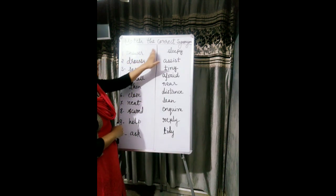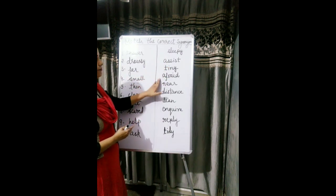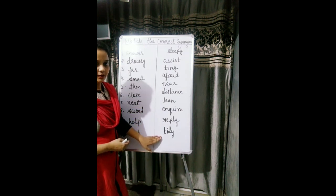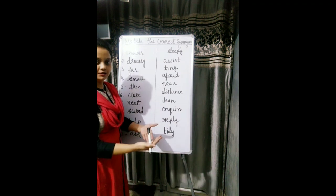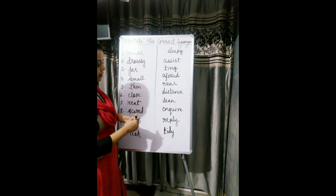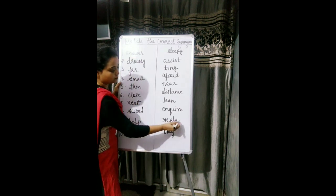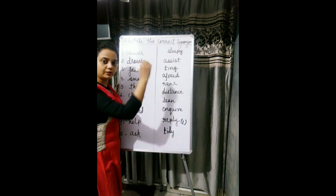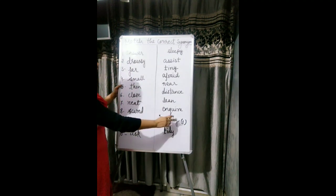The options are assist, tiny, afraid, near, distance, leave, enquire, reply, or title. If you see the word reply — it also means to give the answer, to reply to someone, to give the answer to someone. So reply is the synonym of answer. Number one: reply. Second one is drowsy — sleepy, number two. Third is far — having a distance, so distance is number three.